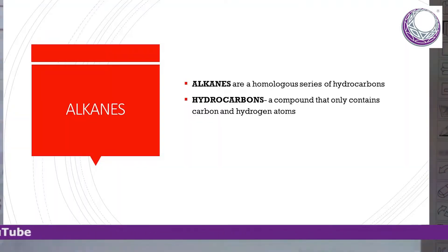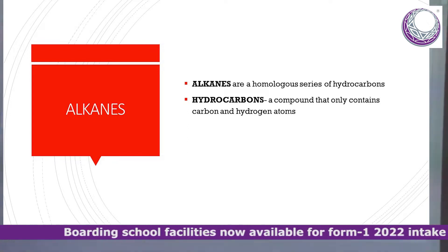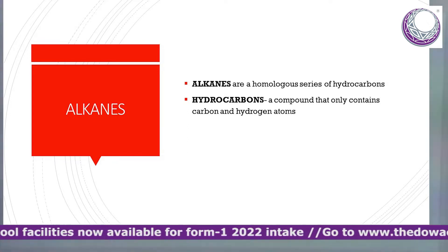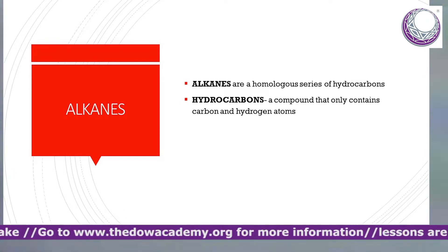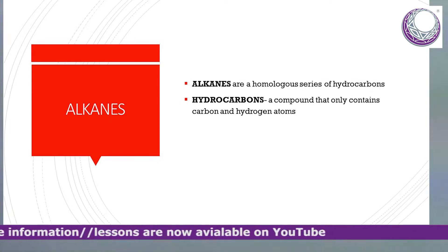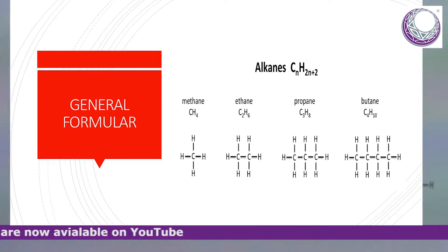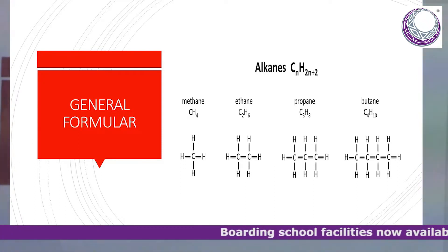Alkanes are a series of hydrocarbons which have got similar properties with some little variations. They are made up of carbon and hydrogen. The general formula, what we are expected to know, is CnH2n+2.